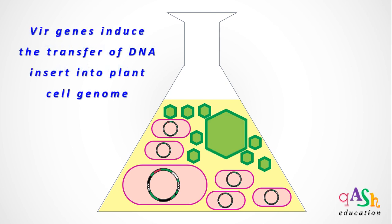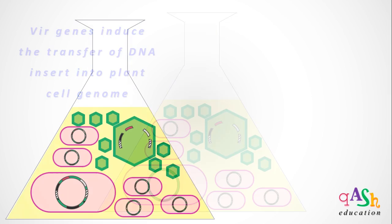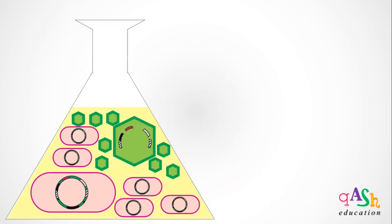The vir genes that are now present on the co-integrate vector then catalyze the transfer of the entire region placed between the left-border and right-border sequences. This includes the common pBR322 sequences, the DNA insert, and the two selectable markers. The transfer takes place with the help of the vir genes and the plant cells undergo transformation.